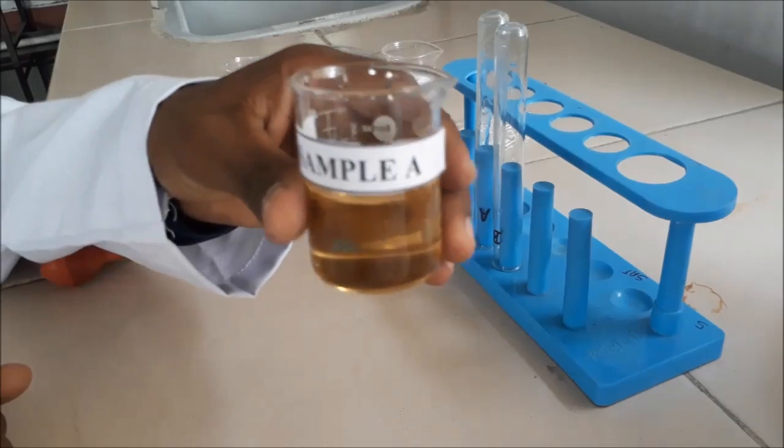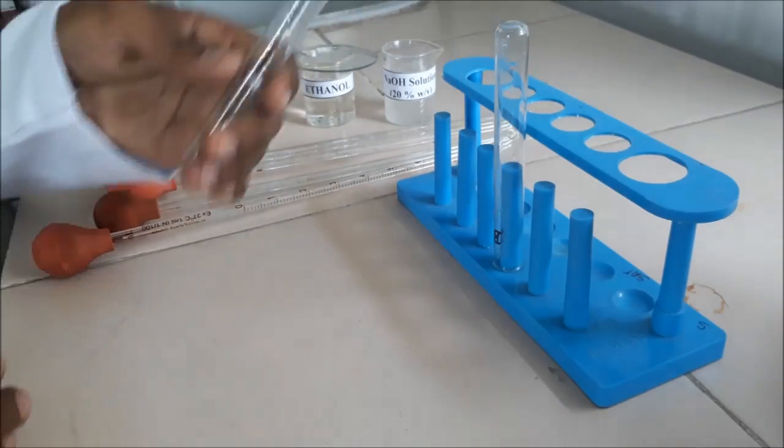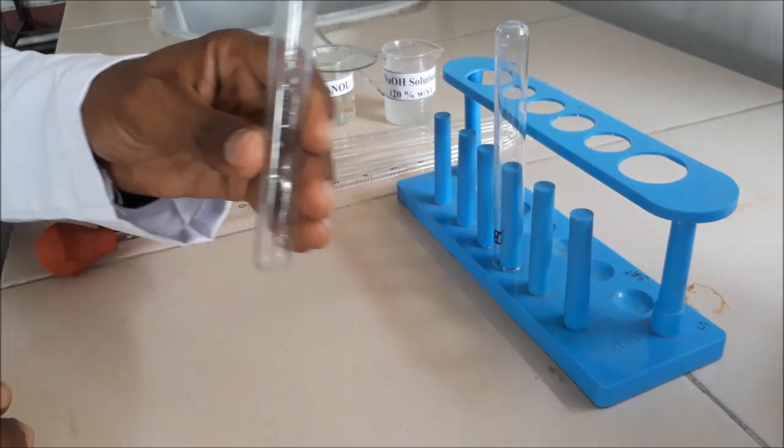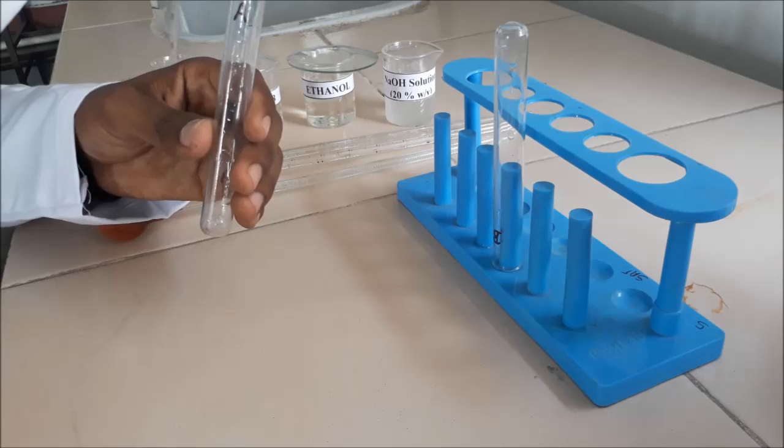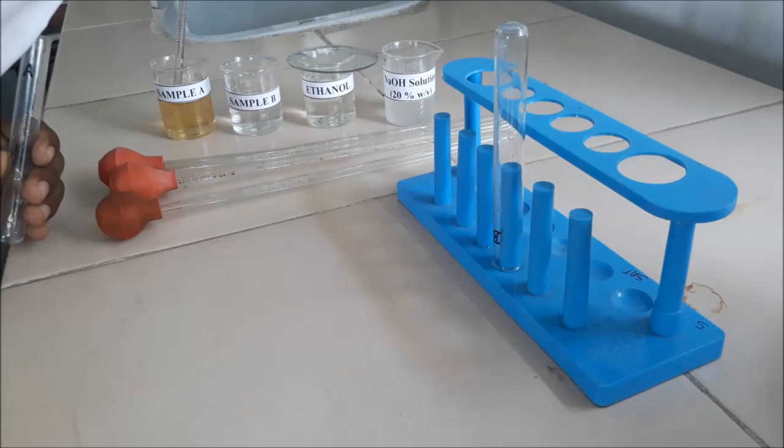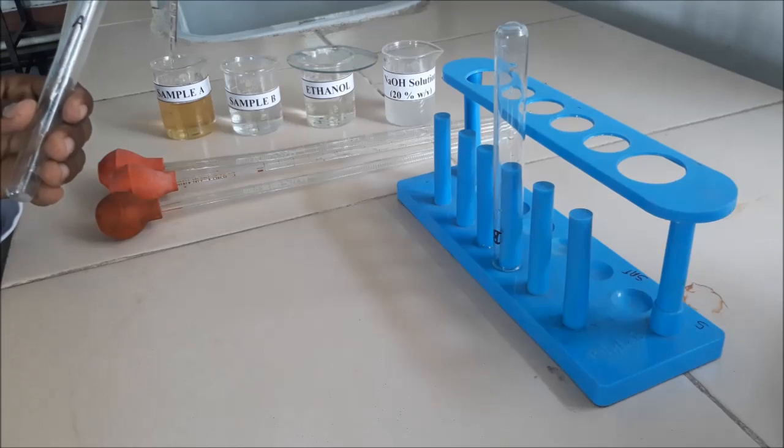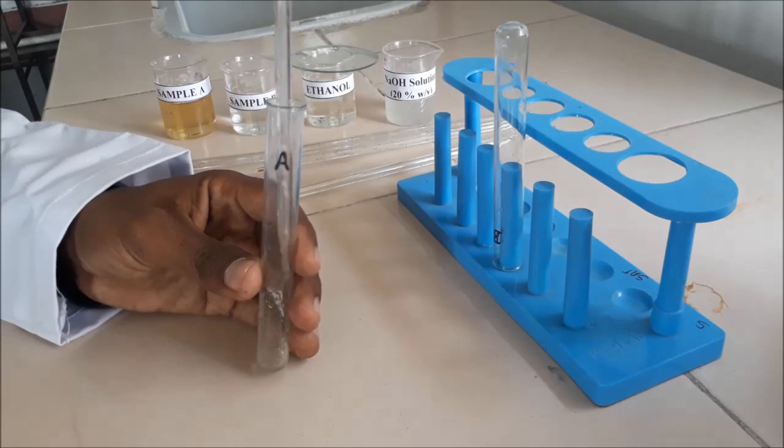We have two samples, sample A and sample B in which we have to perform qualitative analysis for lipid. Take two clean and dry test tubes labeled A and B, pipette out 0.5 ml of sample A and then transfer it into the test tube labeled A.